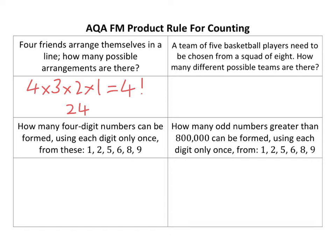So that's kind of how it works. Now, a team of five basketball players needs to be chosen from a squad of eight. How many different possible teams are there? This will surprise you — each basketball player can only be picked once, because they can't clone themselves.